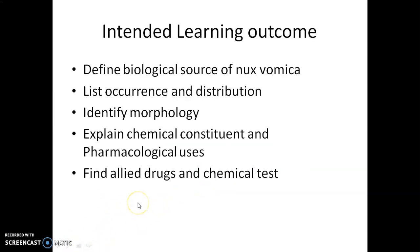After completing this discussion, you will be able to define the biological source of Nux Vomica, list its occurrence and distribution, identify its morphology, explain its chemical constituents and pharmacological uses, and find allied drugs, adulterants, and chemical tests of Nux Vomica.